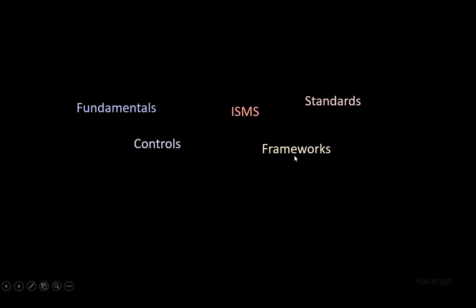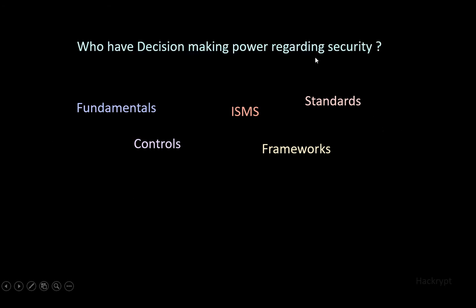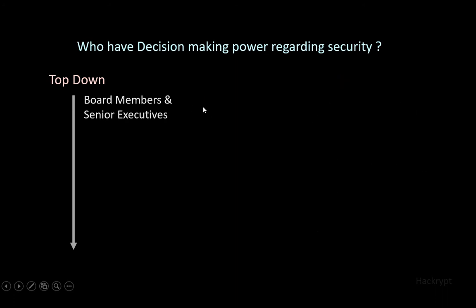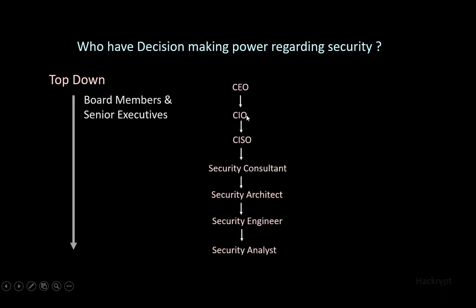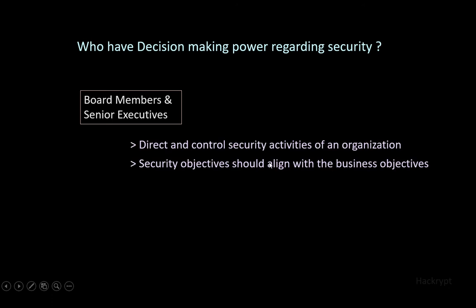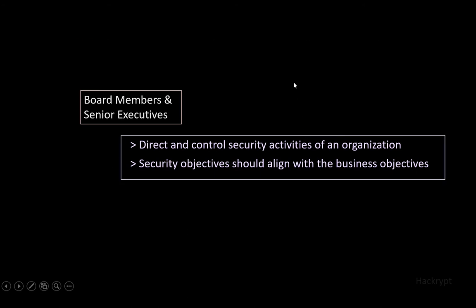Now the question is who has decision-making power regarding security and overall security of the organization. There are two approaches: top-down and bottom-up. In top-down, decision-making starts from the board members and senior executives, whereas bottom-up starts from the technical team — it's not recommended. In top-down, the decision-making flows from CEO, CIO, CSO, security consultant, security architect, engineer, to analyst. The responsibility of board members and senior executives is to direct and control security activities and to make sure that security objectives align with business objectives. These tasks are called security governance.